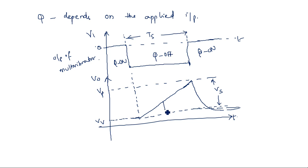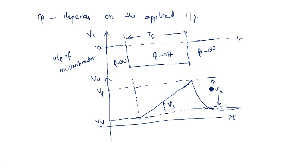This amplitude from the lower value to the upper value is taken as small Vs, and the maximum amplitude is taken as capital Vs. This is how the transistor generates the sweep waveform during its off state and on state.